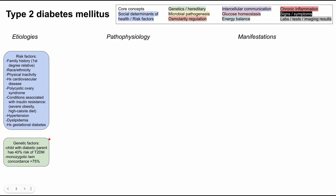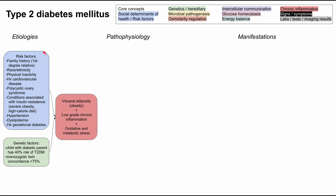There are genetic factors that also play a role. There's no known specific targeted genetic factor, but studies have shown that children with one diabetic parent have a 40% risk of type 2 diabetes. In twin studies, monozygotic twins have a concordance of over 75% for type 2 diabetes. All of these etiologies — these risk factors and genetic factors — lead to the same pathophysiology for type 2 diabetes.